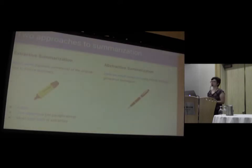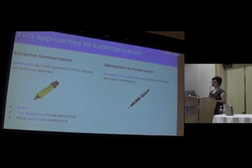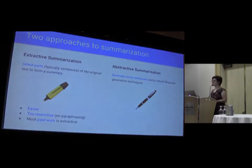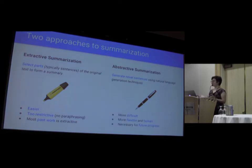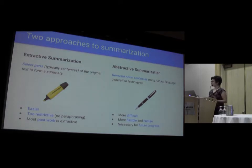Extractive summarization is much easier because it's a much simpler problem to solve. However, it's too restrictive because, for example, you can't paraphrase the original text. For the reason that it's easier, most past work has been extractive, even though it's quite restrictive. By contrast, abstractive summarization is much more difficult because generating natural language is quite difficult. However, it's more flexible, and this is the way that humans summarize. I believe that abstractive summarization is necessary if we're going to make future progress on summarization.